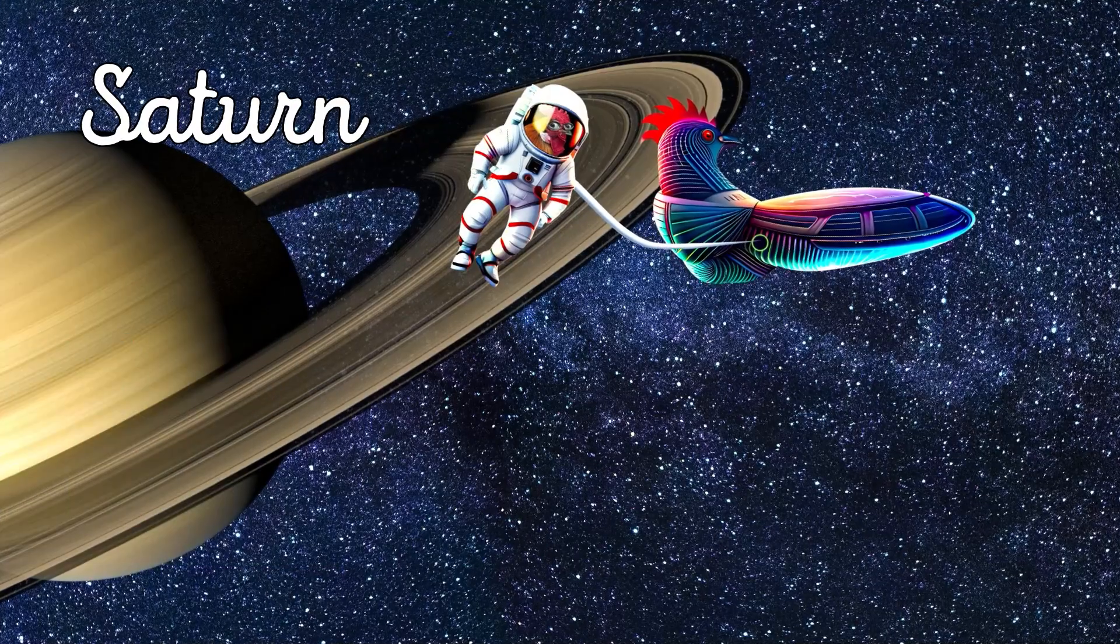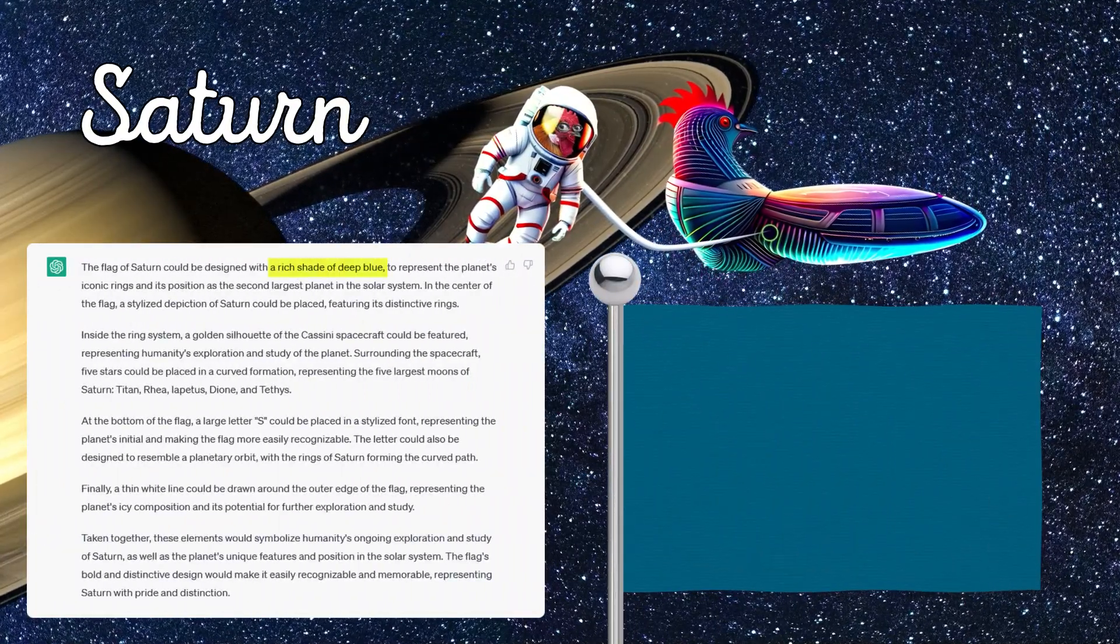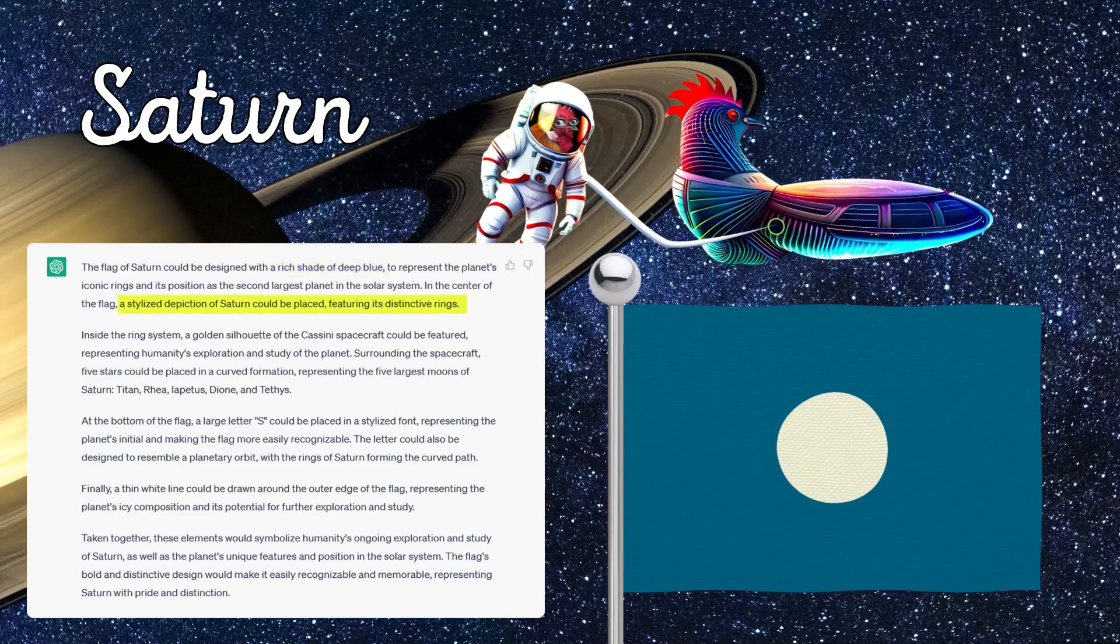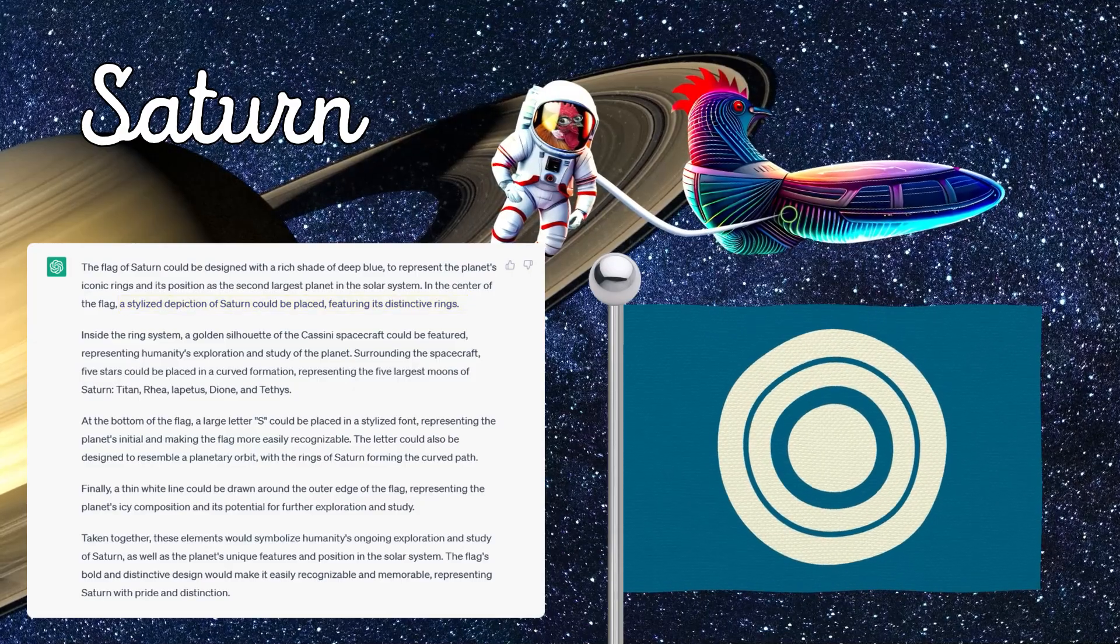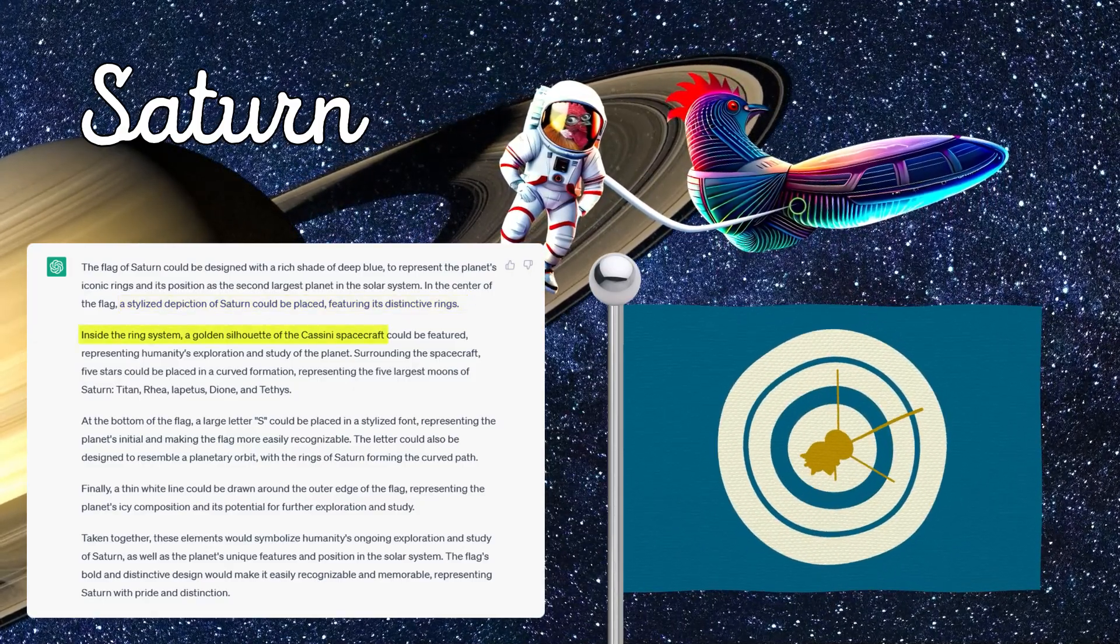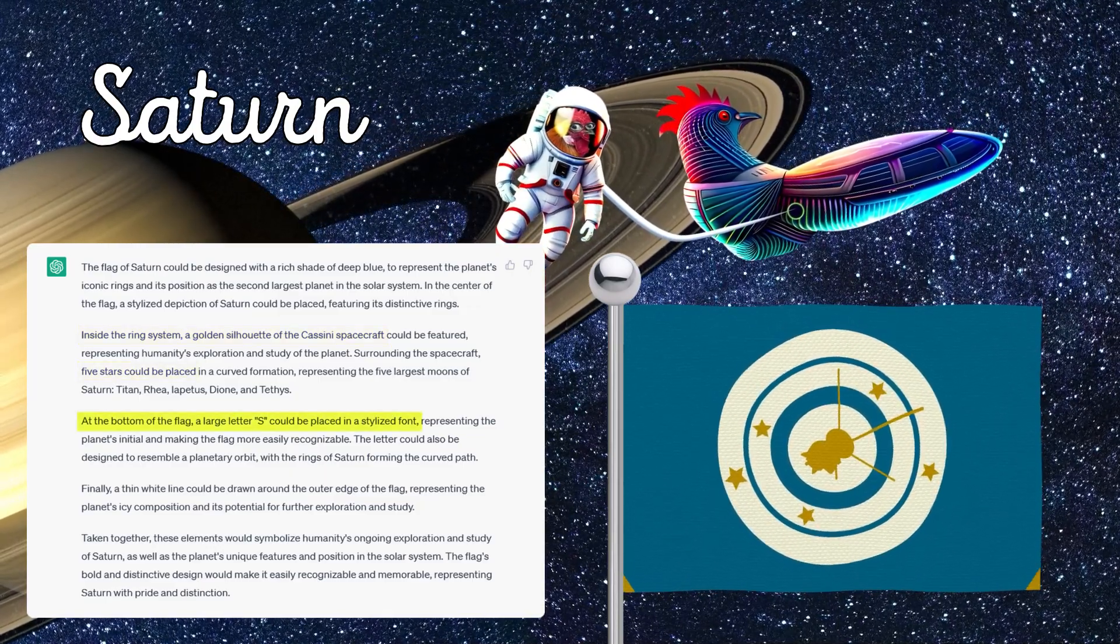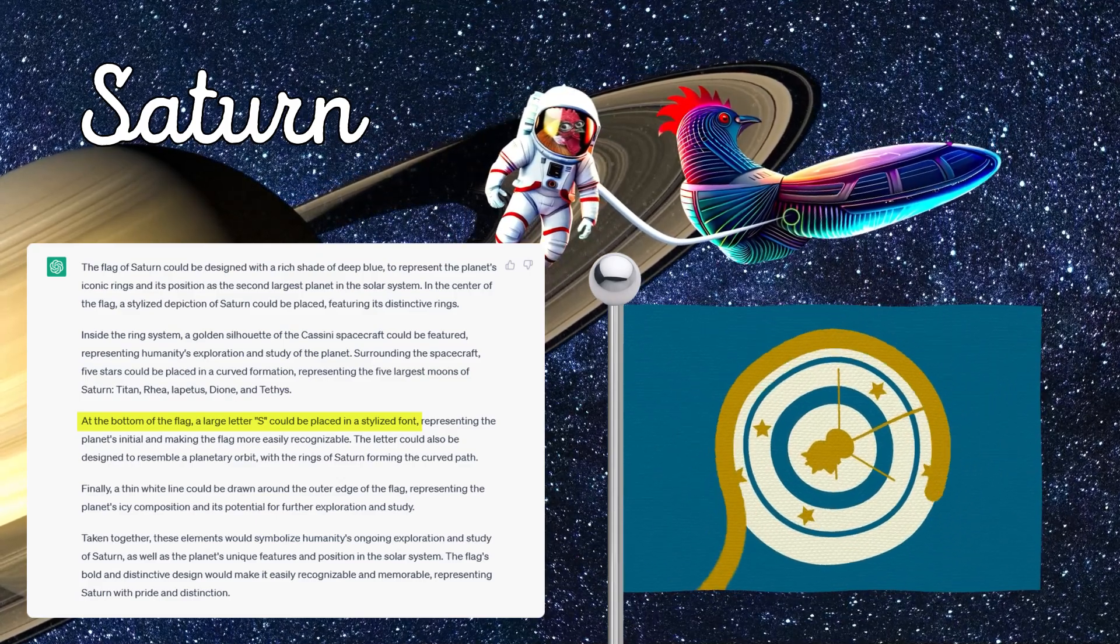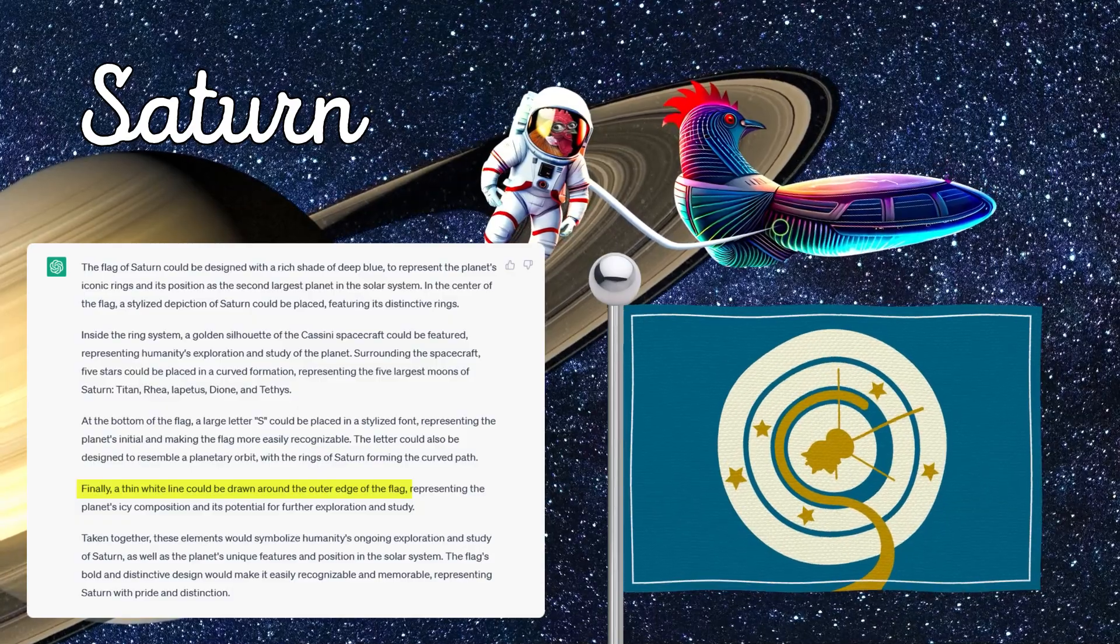Let's think about Saturn's flag design. For the background, we choose a deep ocean blue color. In the center, we will place the stylized image of the planet and its rings. Inside the image of the planet and the rings, we will place the golden spacecraft. Around the spacecraft, we will place five stars. At the bottom, we will place the stylized letter S. And along the edges of the flag, we will draw a thin white line.